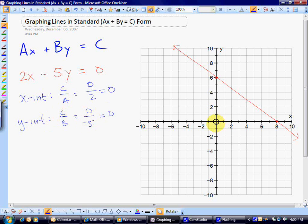Now, when I plot my x-intercept and my y-intercept, I only have one point. I can't draw the line. So now I need to use the slope.